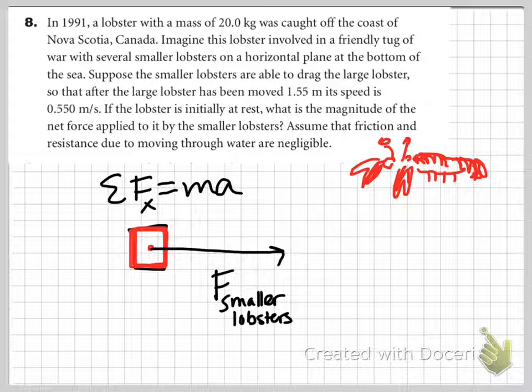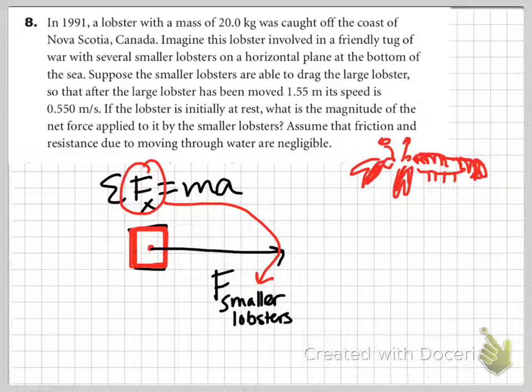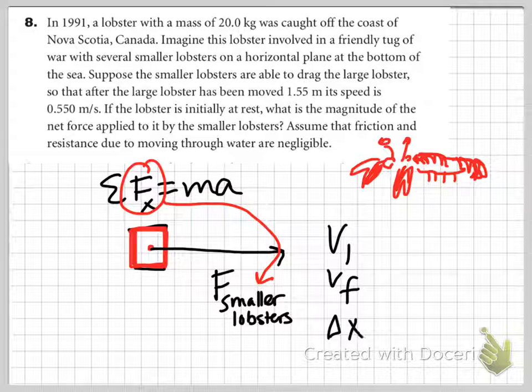Because this force is, in fact, just the force of the smaller lobsters. Now, don't forget, if you've got VI and VF and delta X,